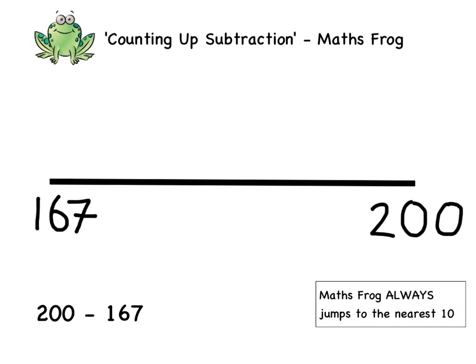We can mark this on the number line by marking a jump of 3, because we did three 1's, and then writing 170 to show that we have jumped to 170.